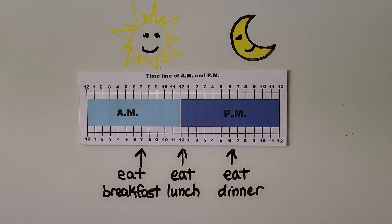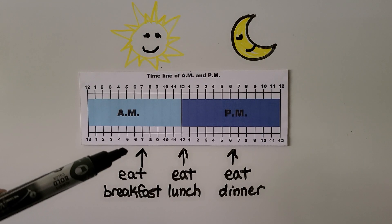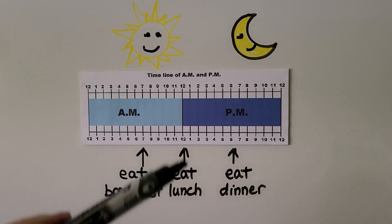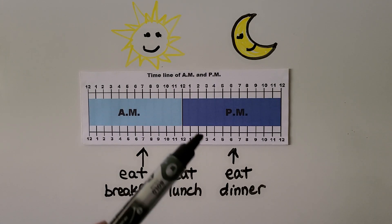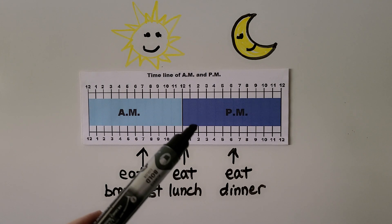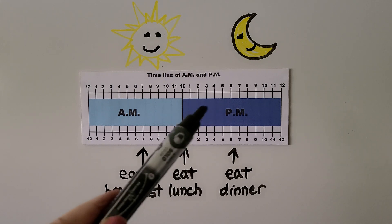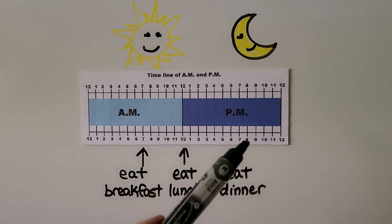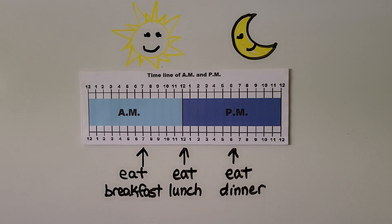In the AM, you would wake up and eat breakfast. Then at 12 noon you would eat lunch. Then in the PM, you have the afternoon, then you eat dinner, then you go to bed, and then we have midnight.